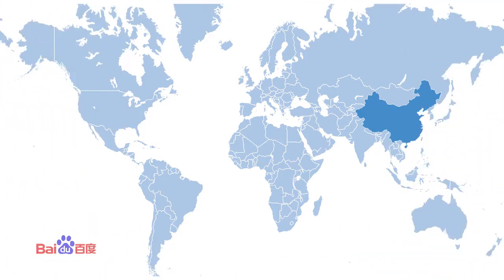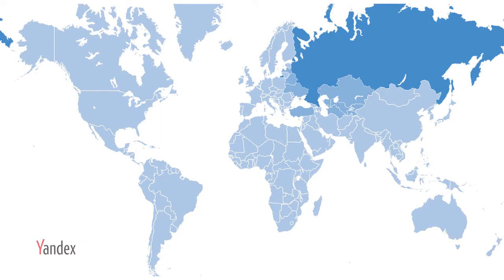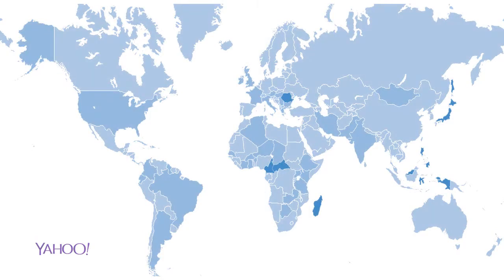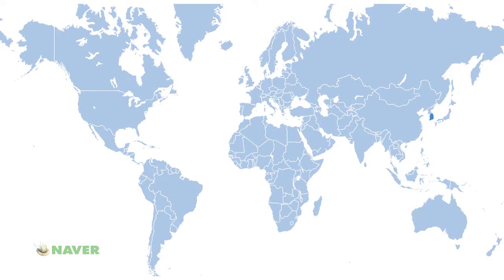Google is the most popular search engine around the world, but Baidu is the most popular Chinese search engine. If you are targeting Russian customers or buyers, then Yandex is the most popular search engine there. Yahoo has been around for a very long time but in Japan it is still the most popular search engine. Naver is the most popular search engine in South Korea, gaining 80% popularity, and Sanzem is the most popular search engine in the Czech Republic.